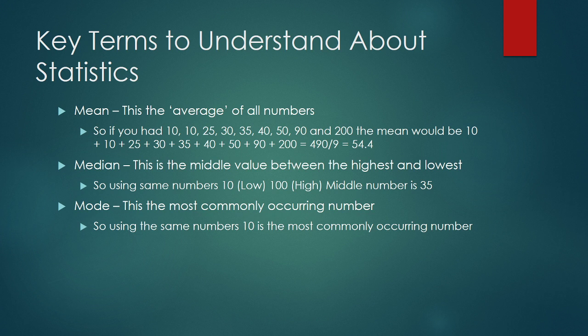The mode is simply the number that occurs most often. In this data set, you'll notice there are two values worth 10 and no other digits repeat. This information is important — sometimes it's very important to look at the mean, sometimes what's in the middle, and sometimes what's the most commonly occurring thing.